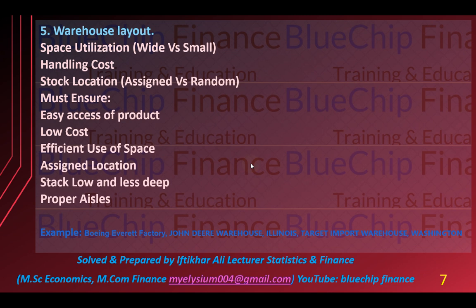Assigned location behtar rehti hai taake aap cheez ko jaldi access kar sakein. Stack low and less deep — stacks bohat ziyada unche nahi lagane chahiye aur cheezein bohat ziyada deep bhi nahi honi chahiye, taake access mein dushwari na ho. Proper aisles bhi is ke andar honi chahiye. Is ki examples mein Boeing Everett Factory warehouse, Joliet, Illinois mein Joint Dairy, aur Target import warehouse Washington shamil hain.